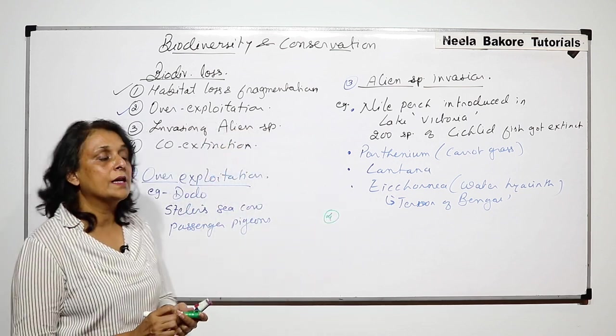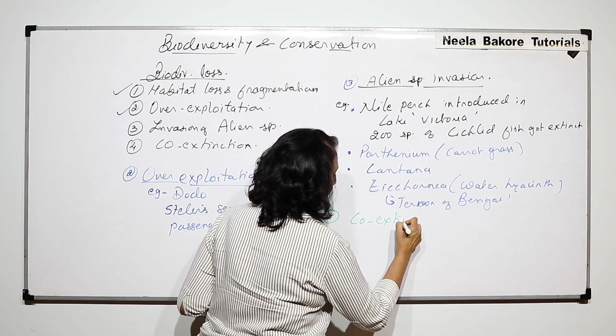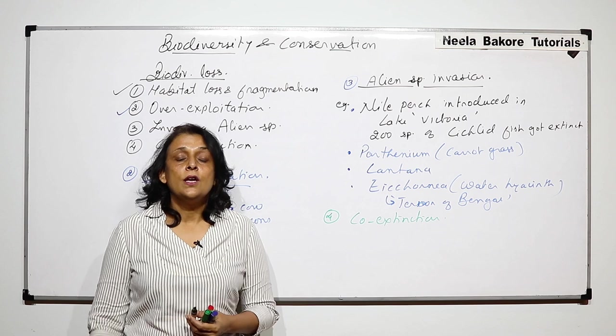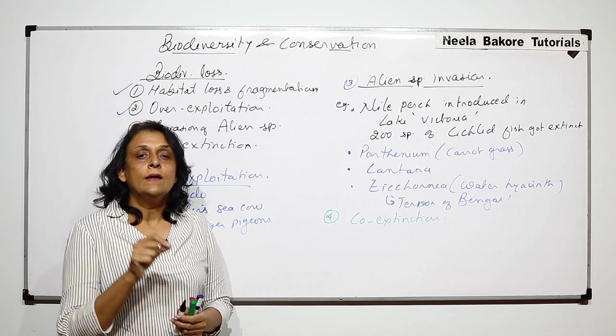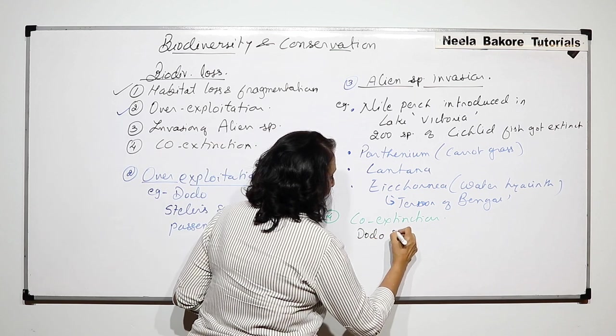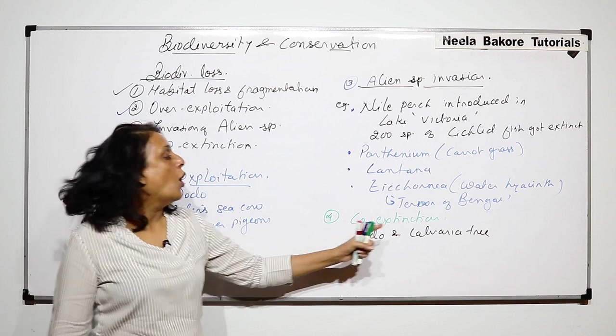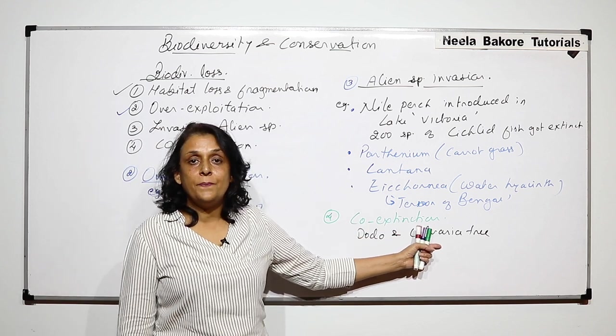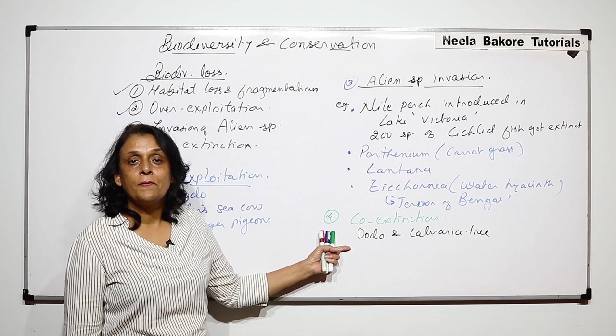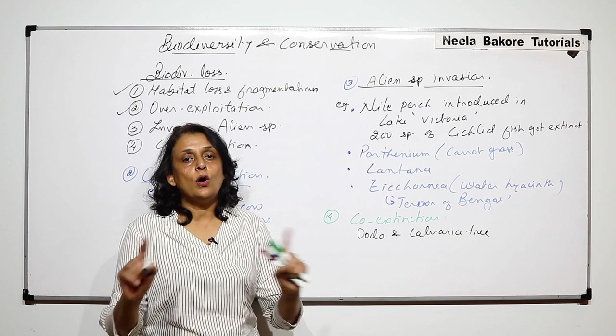The fourth reason or cause for biodiversity loss is co-extinction. We have heard of many relationships amongst organisms in which the interdependence is so much that if you remove one, the other one is automatically going to get extinct. Here we will take the example of Dodo and Calvaria tree. Dodo would feed on the seeds of Calvaria tree, and the seeds would germinate only when they would pass through the digestive system of Dodo.